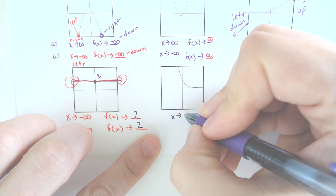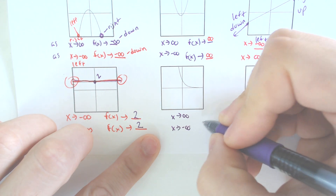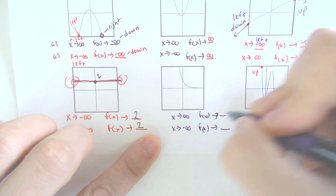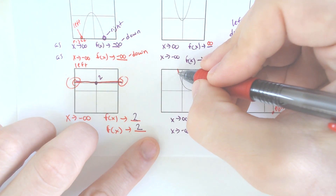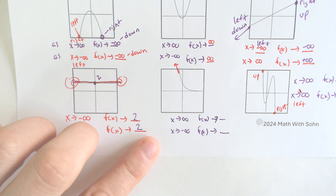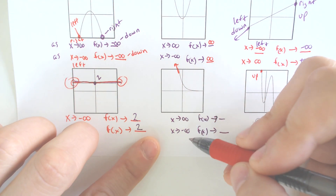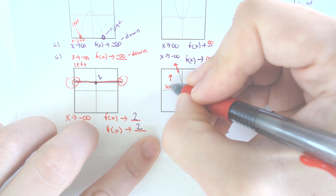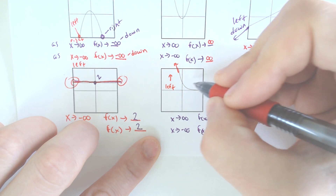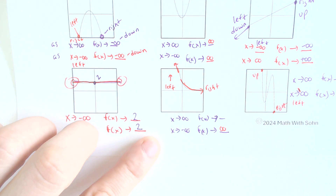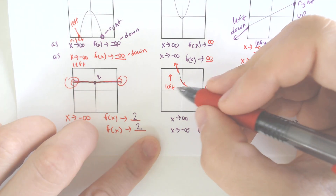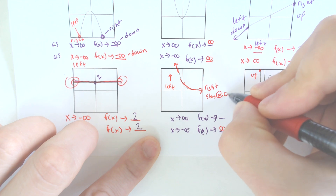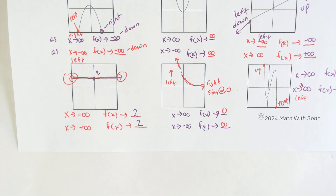For this last unique example: as x approaches infinity and as x approaches negative infinity, what is f(x) doing? On the left side, we are definitely going up — so positive infinity. On the right side, it looks like it's just bottoming out, staying at zero. It never crosses the x-axis, so on the right side f(x) is approaching zero.